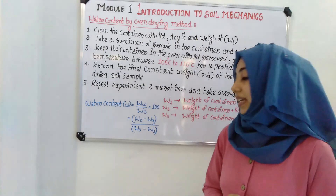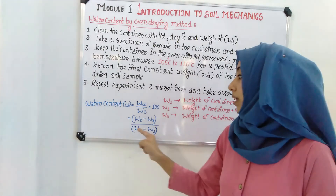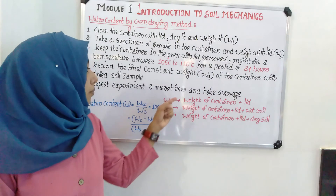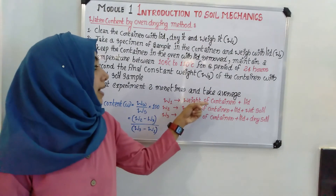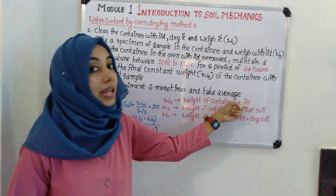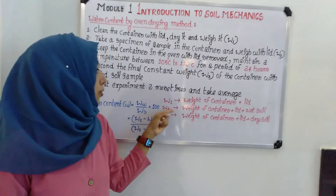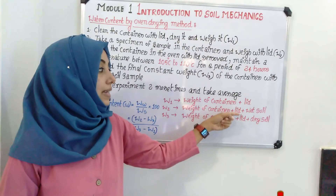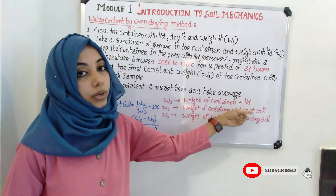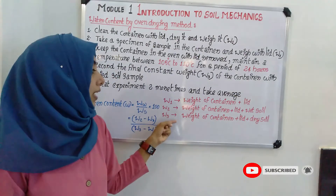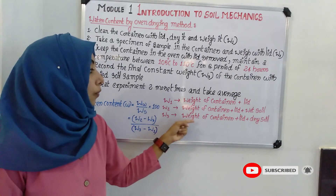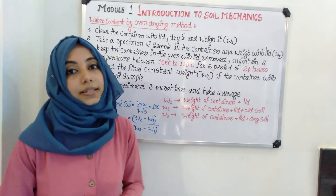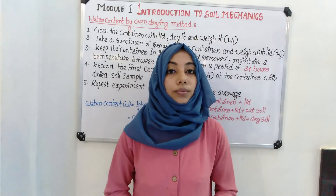Repeat the experiment two more times and take the average. The equation for water content is: water content = (weight of water / weight of dry soil) × 100, where weight of water = W2 − W3, and weight of dry soil = W3 − W1. Here, W1 is the weight of container plus lid, W2 is the weight of container plus lid plus wet soil, and W3 is the weight of container plus lid plus dry soil.